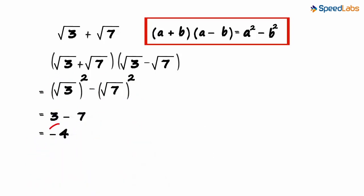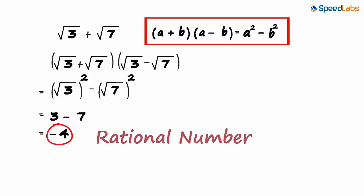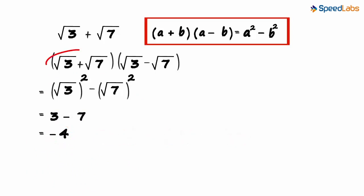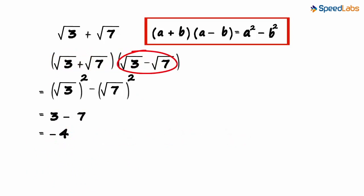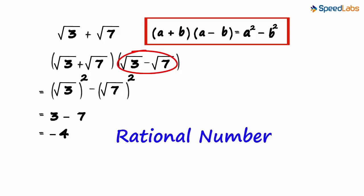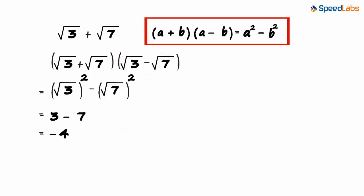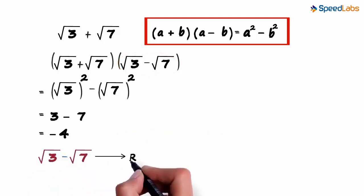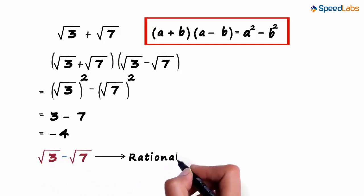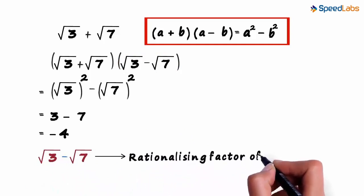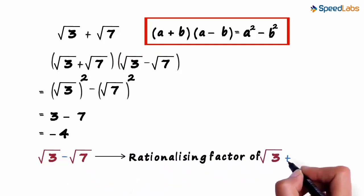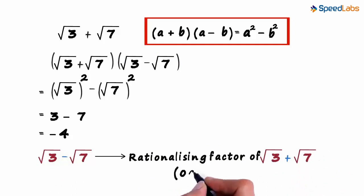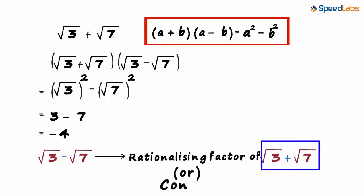And minus 4 is a rational number. We multiply this with √3 minus √7 to get a rational number. Hence we can say that √3 minus √7 is a rationalizing factor of √3 plus √7. It can also be called the conjugate of √3 plus √7.